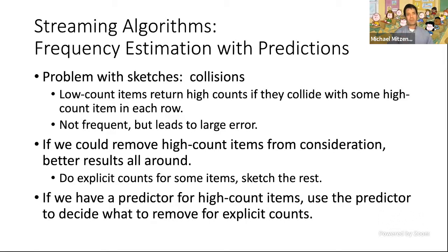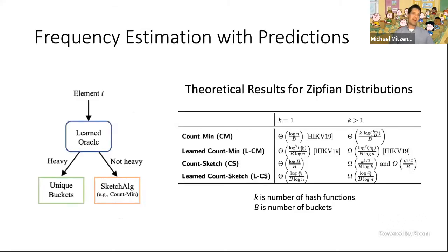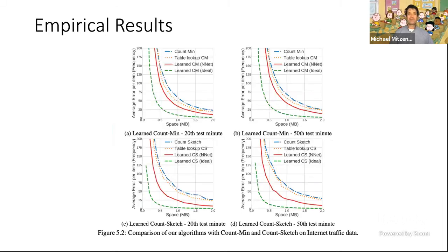If we knew which items were high-count, we could pull them out and give each its own counter — making their counts accurate and preventing them from inflating other items' estimates. So if we have a predictor for heavy items, we can use it to decide what to count explicitly. An element comes in; if predicted heavy, it gets its own unique counter; otherwise it goes to the count-min sketch. Their results show really big gains in accuracy in practice from using these learned models.